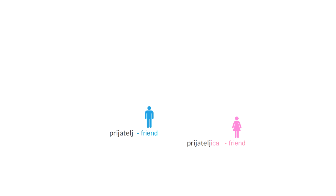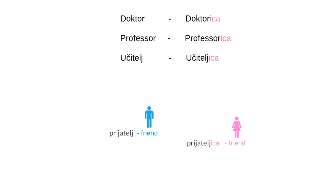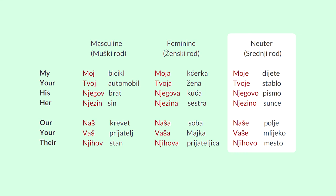And this -ица ending makes professions and friends feminine. Доктор — докторица. Профессор — профессорица. Now the neuter gender.